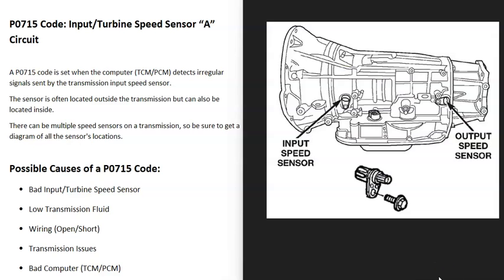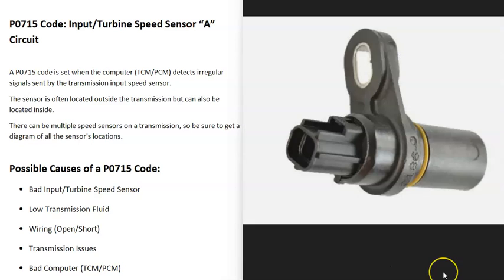Transmissions can have different sensors — output speed sensors, vehicle speed sensors, and an input speed sensor. The computer sees that this input speed sensor is having some kind of issue, either not communicating or communicating intermittently. So it's going to have to be troubleshot to know why.